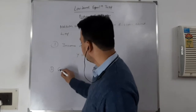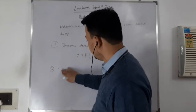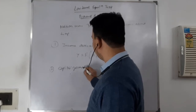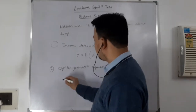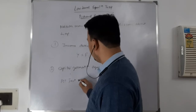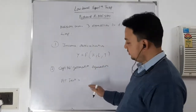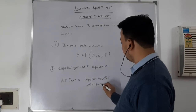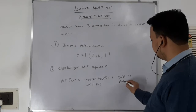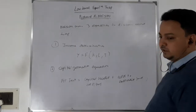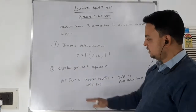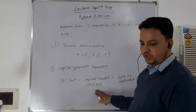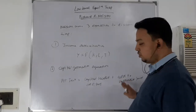Second is the capital formation equation. Capital formation means net investment — capital that you are creating out of saving. Net investment is the capital created out of saving. The second equation relates to the additional amount of resources available for investment.